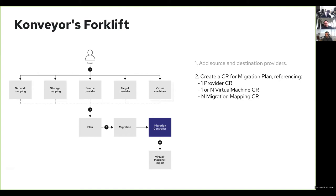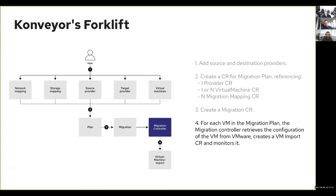From there, the user creates a migration CR, which is the instantiation of the plan. Behind the scenes, we use a component called VMIO that imports a single VM. For each VM, we create one single import and orchestrate all the imports, allowing us to have throttling at the VM and plan level.